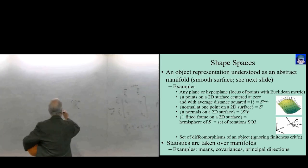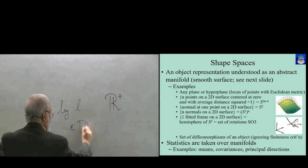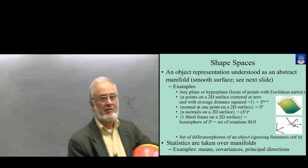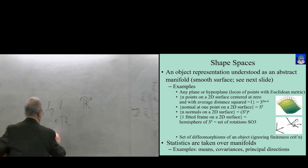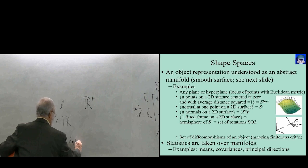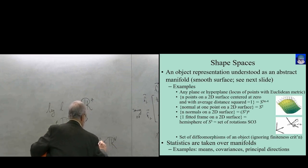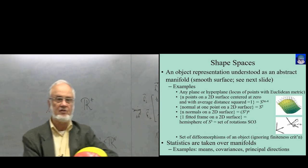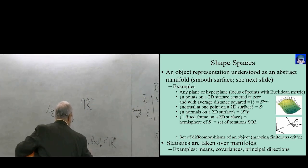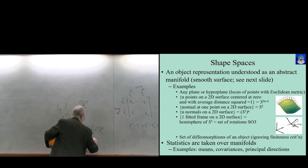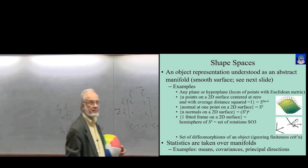The standard approach for lengths is to take their log, which turns R+ into R1. If I have N lengths for the N displacement vectors, then log L1, log L2, ..., log Ln is in R^N, the N-dimensional Euclidean space. So a diffeomorphism lives on R^N for the N lengths, cross S2 to the N for the N directions.